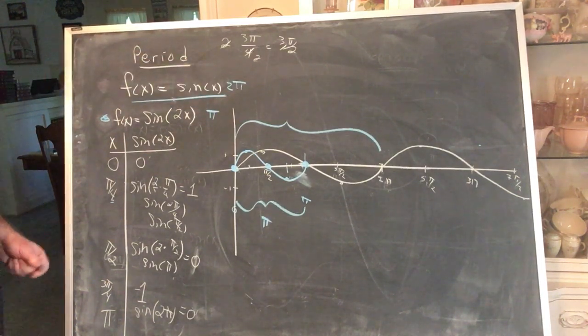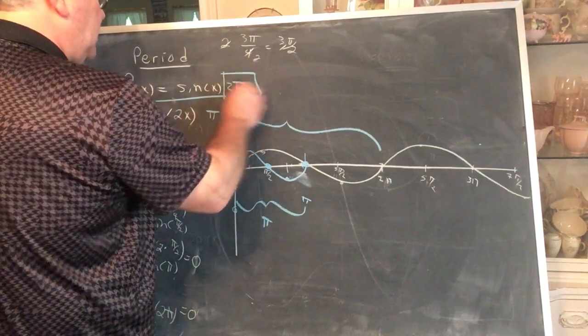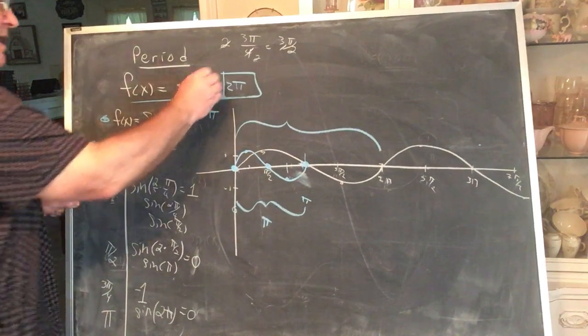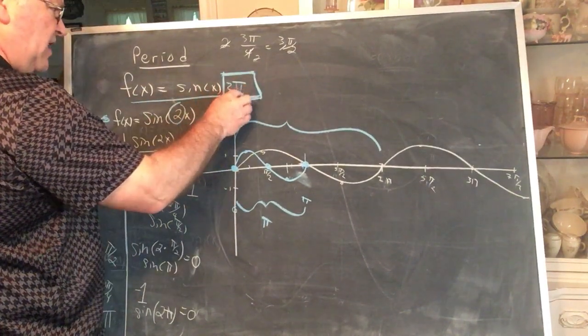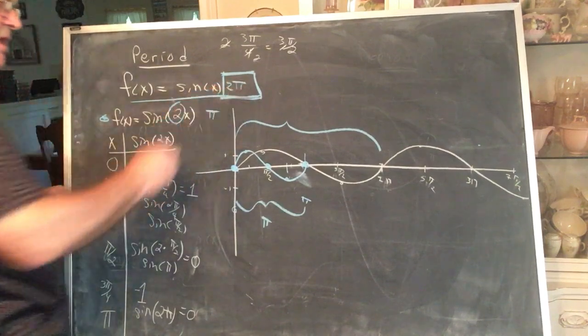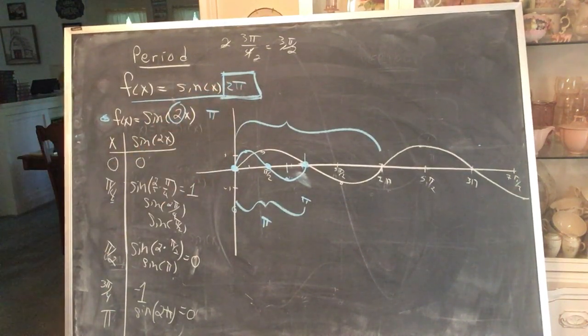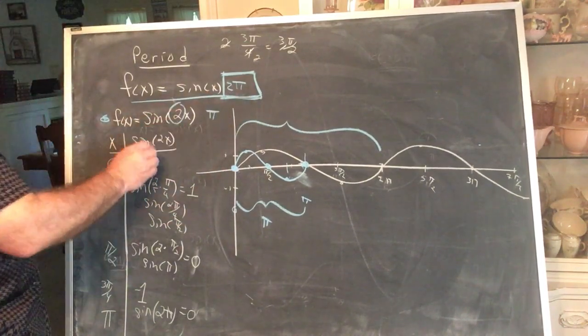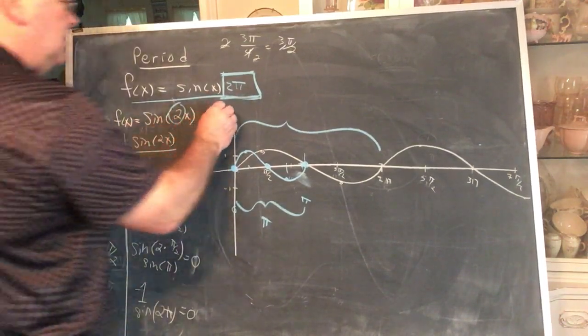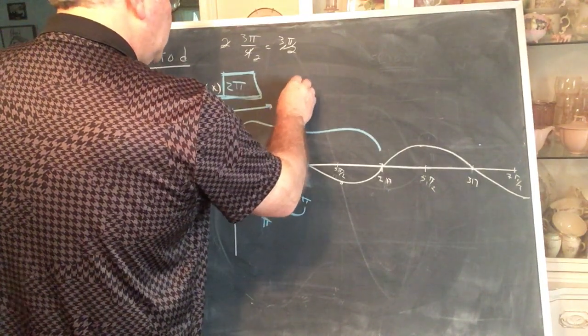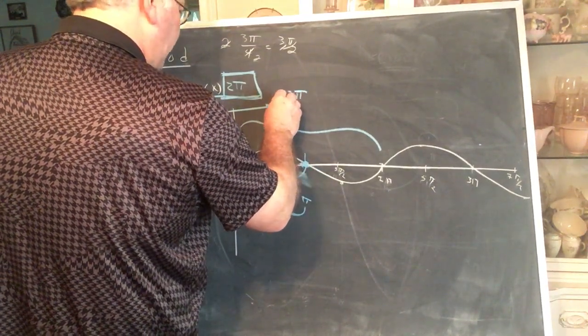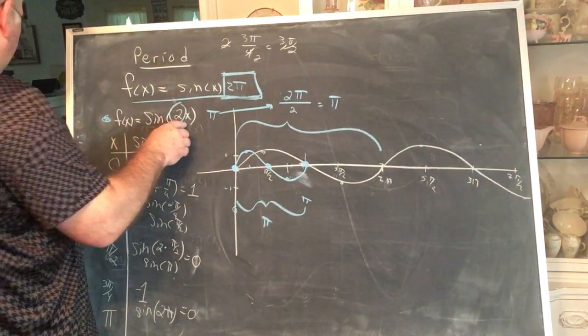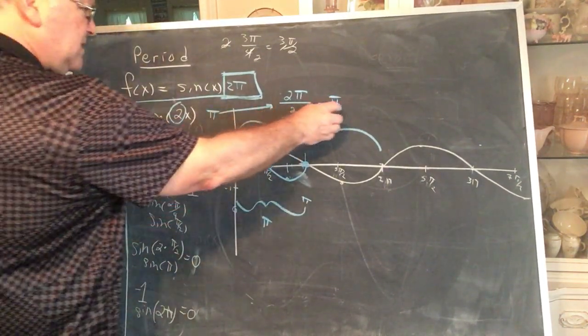The rule is this. You take whatever the period is for the original function, and you divide by that number. That's why you need to know the periods for the original functions. Whatever the period is for the original function, you divide by this number. So sine of 2x, the period is the original period of sine, divide by 2. The period of sine of 2x is π.